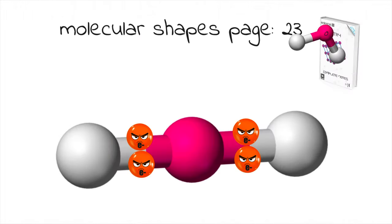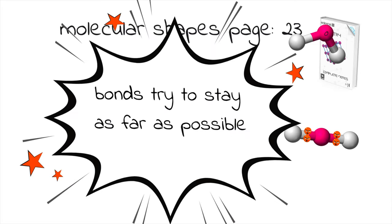You have to think of covalent bonds as areas that are rich with electrons. As you know, electrons are negatively charged, so those electrons would rather have as much distance as possible from one another. Covalent bonds are areas of very high electron density, and electrons would always prefer to stay as far apart as possible. That's one important factor that determines the shape of every molecule.